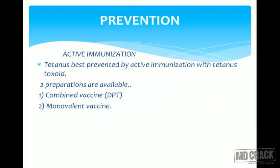Coming to prevention — active immunization is done by tetanus toxoid. There are two preparations available: the first is DPT (diphtheria, pertussis, and tetanus), where the T component is tetanus. The second is a monovalent vaccine called TT or tetanus toxoid. So you have two preparations: DPT and the monovalent version TT.